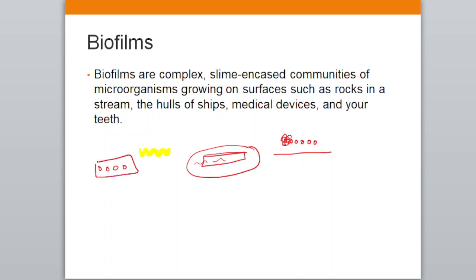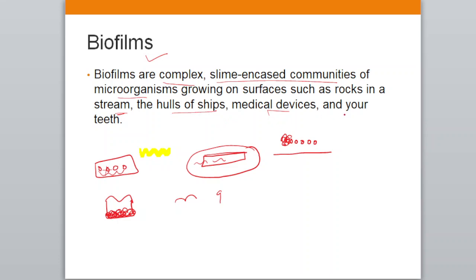For example, molecules and microorganisms will grow on teeth as plaque. They have cell-to-cell communication called quorum sensing. Through quorum sensing they communicate, form a team, stay together, multiply, and form a colony. That is what we call a biofilm — a complex slime-encased community of microorganisms growing on moist surfaces such as rocks, stream beds, hulls of ships, medical devices, and teeth.